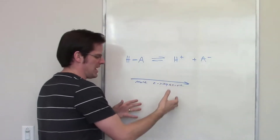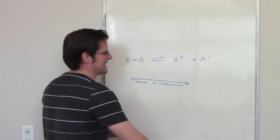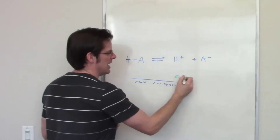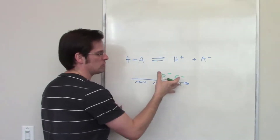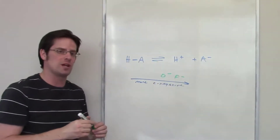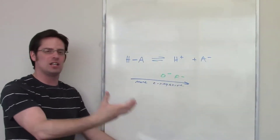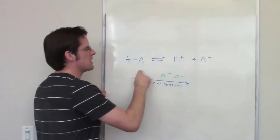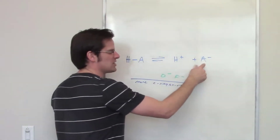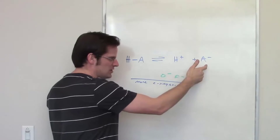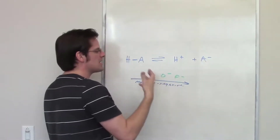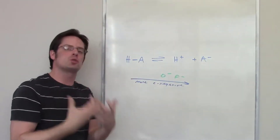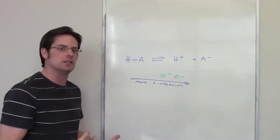Fluorine, for example, is more able to handle a negative charge than oxygen because fluorine is more electronegative — it can suck electrons towards itself more than oxygen. Therefore, F⁻ is more stable than O⁻, and as a result, HF is a stronger acid than H₂O.